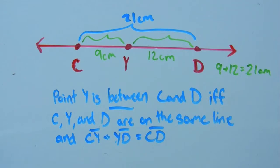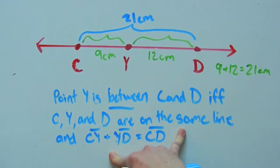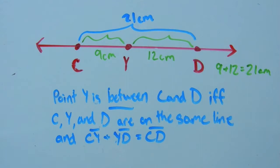So if and only if is saying that you can state this either saying that the point is between first, or you can say they're on the same line and that they add to be the length of the entire segment first. Either one is correct because this is an if and only if statement. Let's look at one more example.